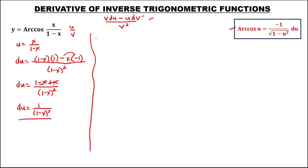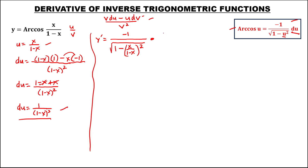So to find y prime, from this formula, this is negative 1 over the square root of 1 minus u to the power 2, and u is x over 1 minus x, quantity to the power 2, then times the derivative of u — that's 1 over the quantity of 1 minus x, to the power 2.